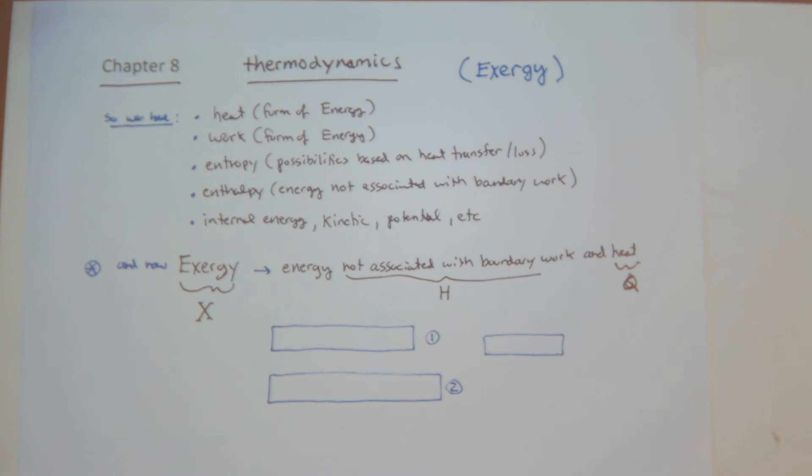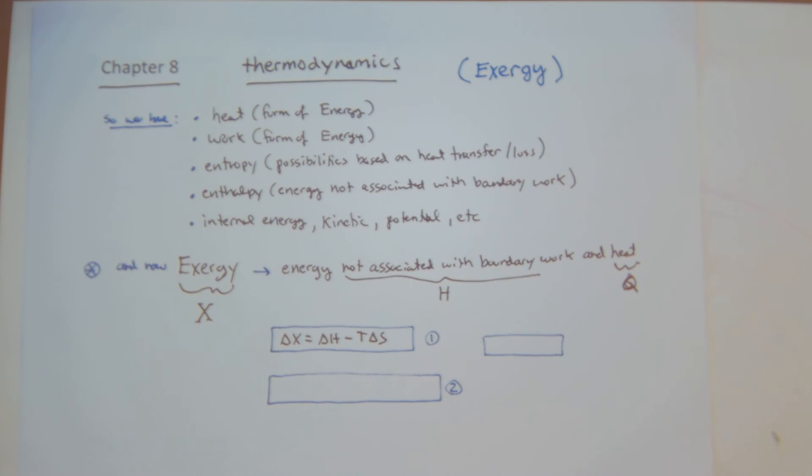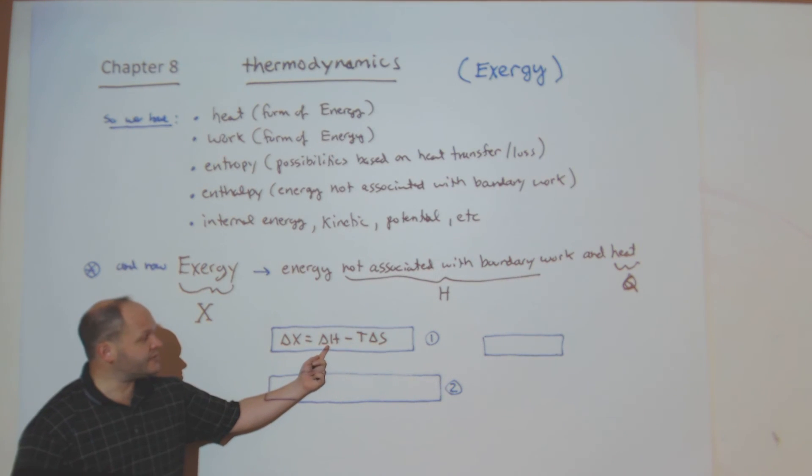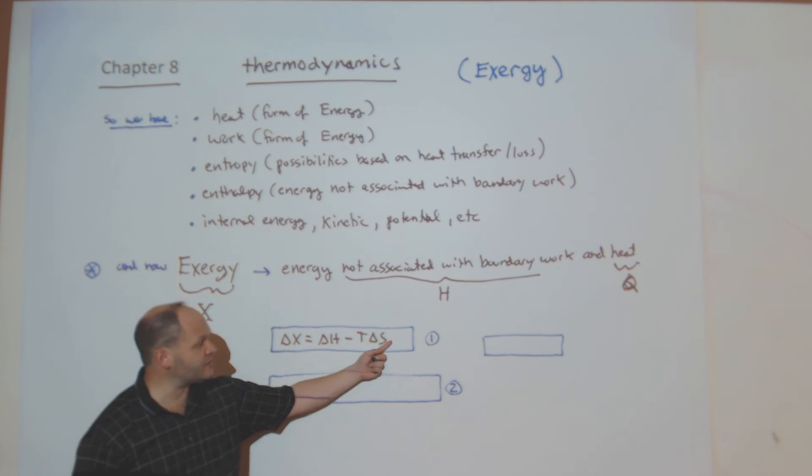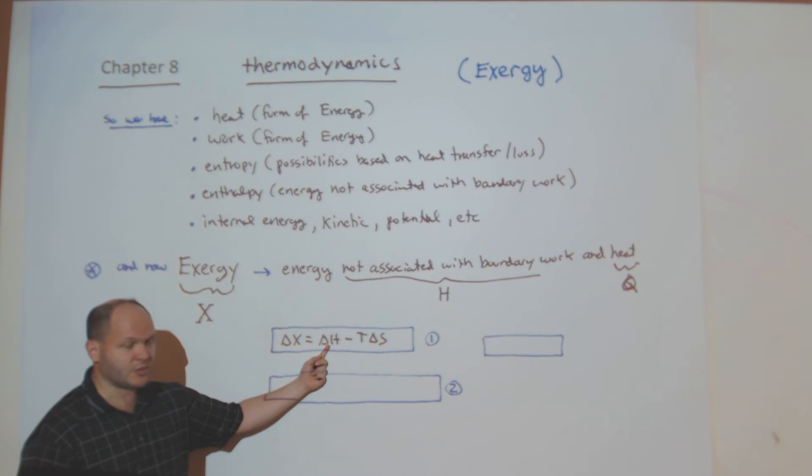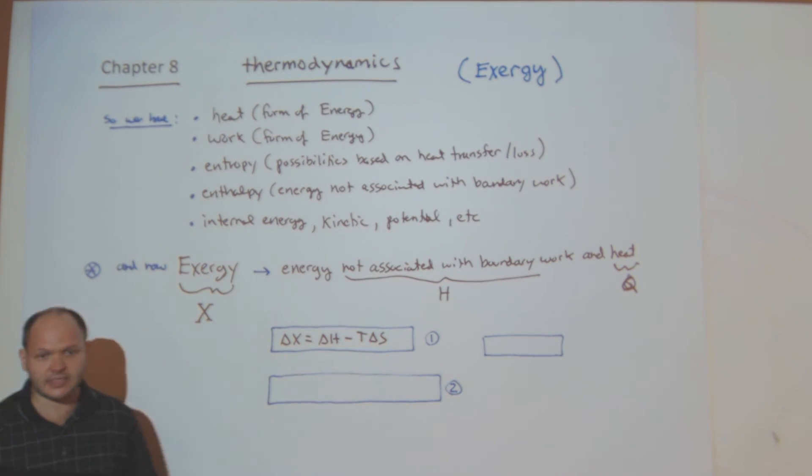So we have the enthalpy not associated with boundary work. So we have this expression for H that is related to U. And we can get an expression for X, or delta X is equal to delta H minus T delta S. So this is the part not associated with boundary work, and this is the part associated with heat. So my change in X or G is equal to delta H minus T dS.